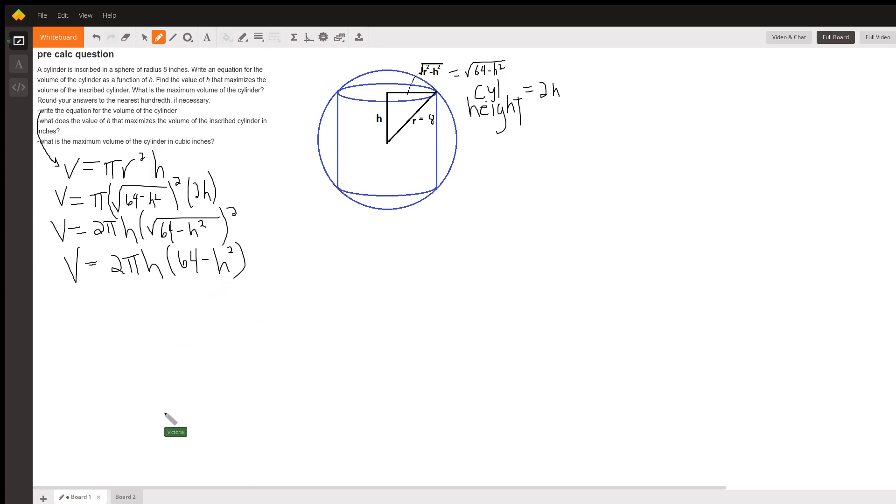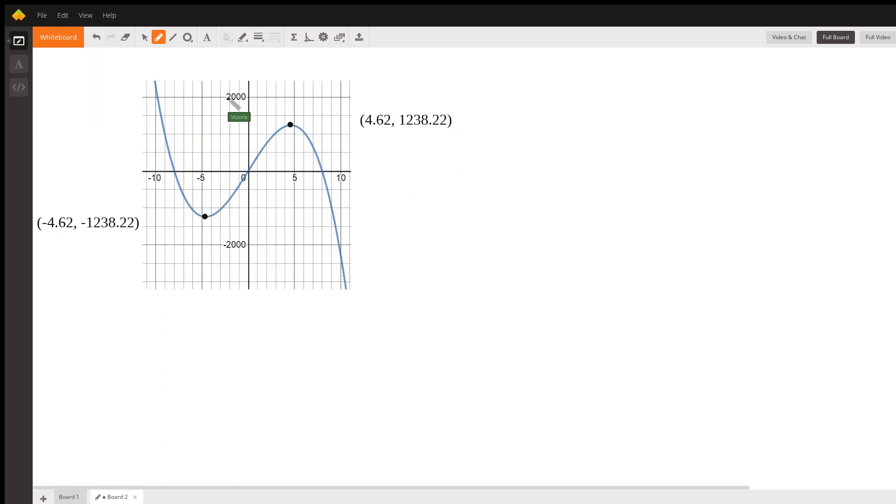And when you graph that, you get this. And it turns out, if you use calculus on this, that this number is 8 over the square root of 3.